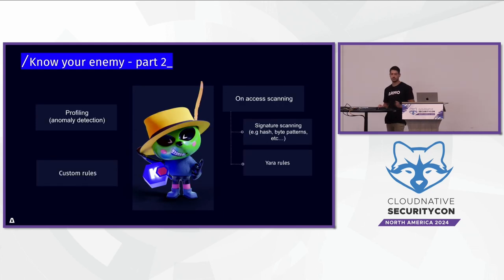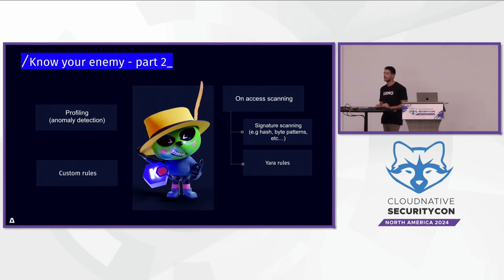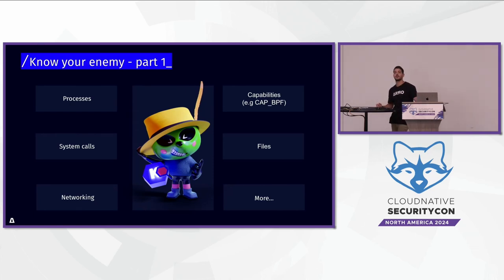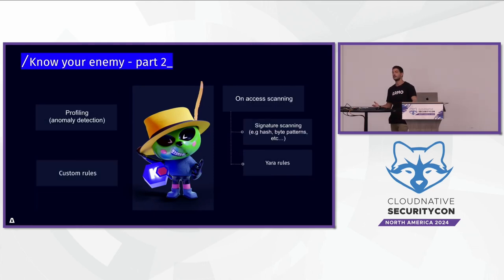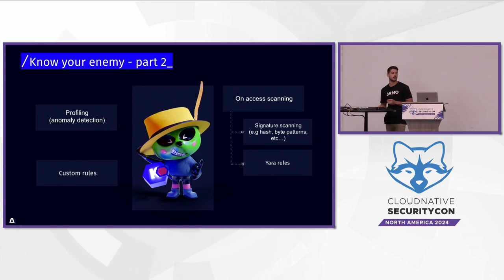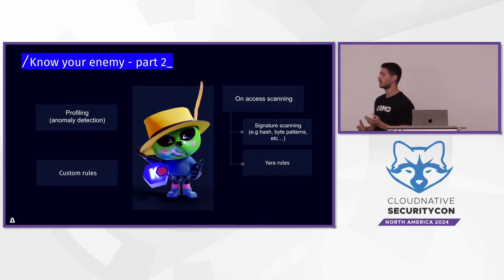Each tool has its own way of acting. When talking in cloud-native environments, the more common approaches are anomaly detection and custom rules. Anomaly detection can be, for example, collecting all those metrics, creating a baseline behavior of an application — say you have an NGINX workload in your Kubernetes environment. You can trace all that information, create a baseline, and then enforce anomaly detection rules above that. Custom rules detect things like reverse shells or fileless execution in memory, which is more like a signature-based detection and doesn't rely on anomalies.